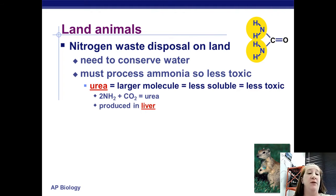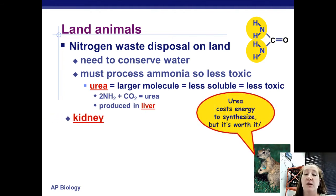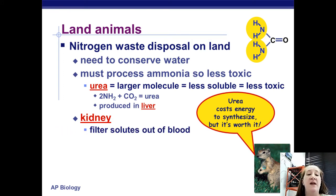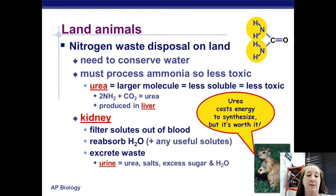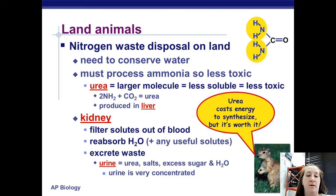You produce urea in your liver — it does cost energy to synthesize, but it's worth it. At your kidney, you filter the urea out of your blood, get it into your urine, and excrete it from the body. Urine is going to be very concentrated with urea and any excess substances in your body.